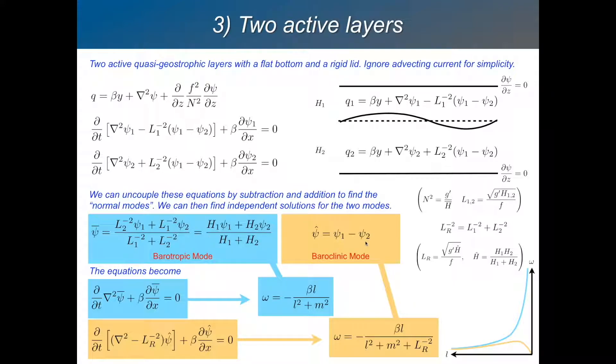So if we do a substitution and we rewrite these two equations, not in terms of psi 1 and psi 2, but just in terms of psi bar and psi hat, we get these two equations. The equation for the barotropic mode, which looks quite naturally like the barotropic vorticity equation. And an equation for the baroclinic mode, which includes this extra stretching term with the Rossby radius in it.